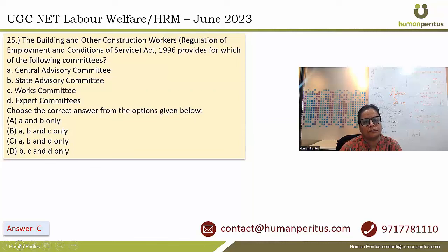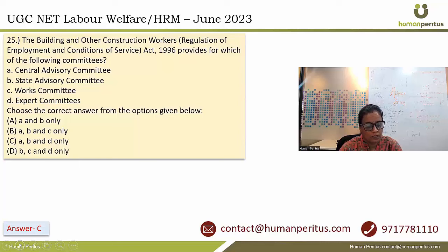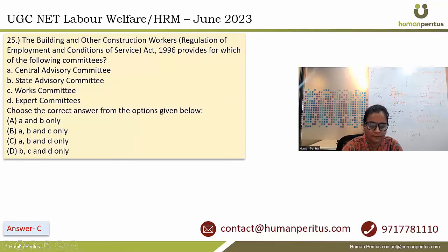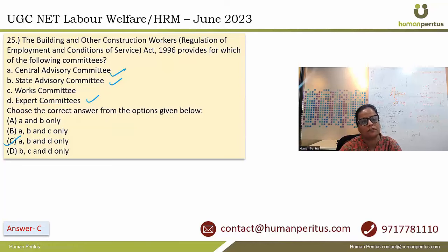The Building and Other Construction Workers Regulation Act 1996 provides for which committees? Sections 3 to 5 under Chapter 2 of the BOCW Act state that there should be a Central Advisory Committee, State Advisory Committee, and Experts Committee. A, B and D — so the correct answer is option C. Works Committee is formed under the Industrial Disputes Act.